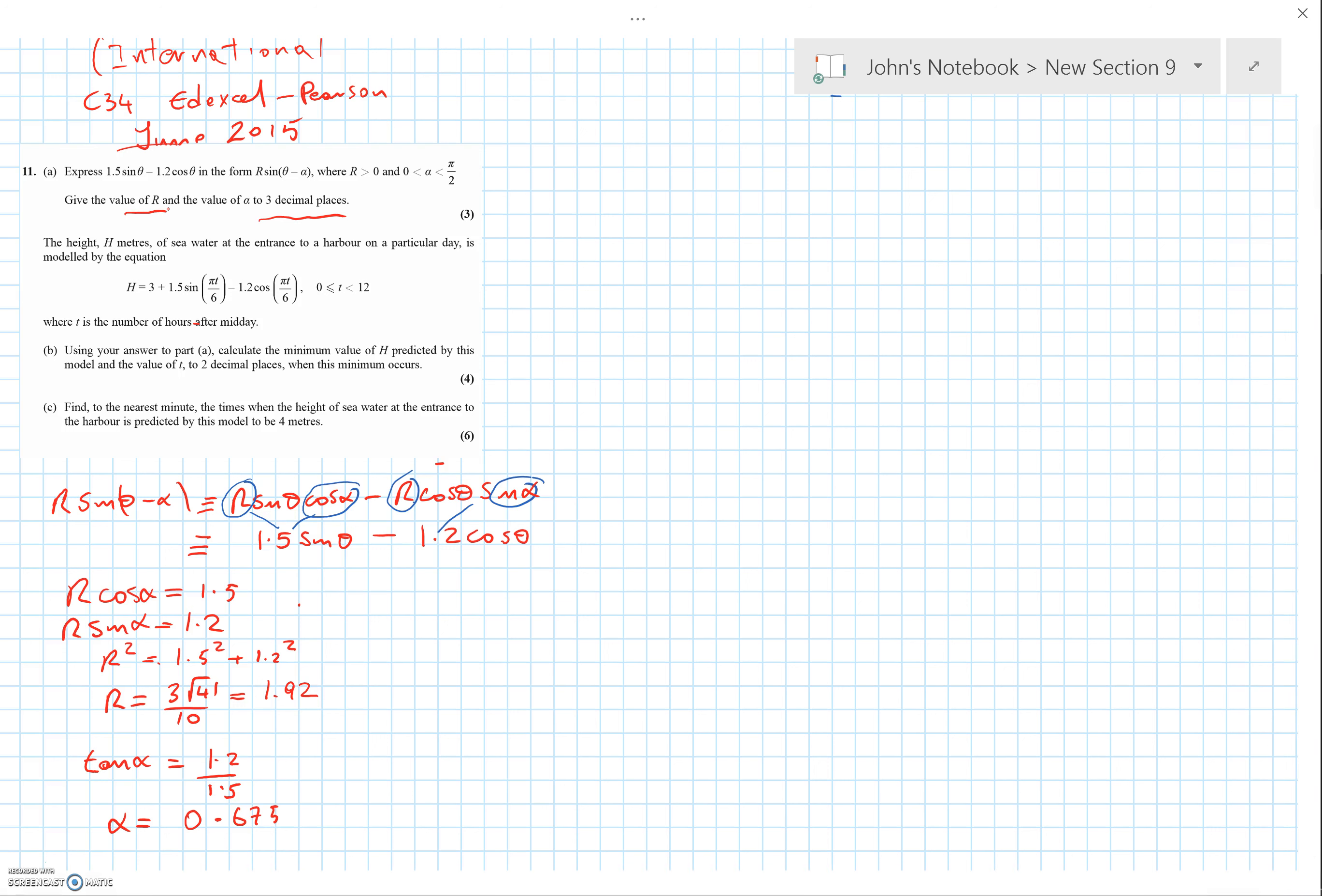I'm going to use the exact value in any later part of the question, even though it asked for three decimal places here. Now onto part B, which was probably misunderstood by a number of people. Let's write it out because obviously we're going to use part A in a slightly more convenient form using this R sin(θ - α) form.